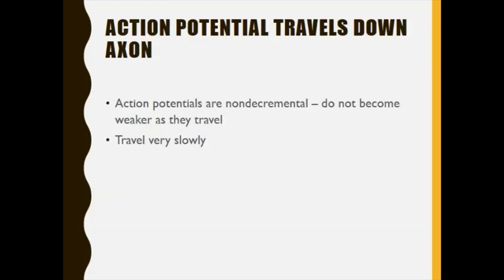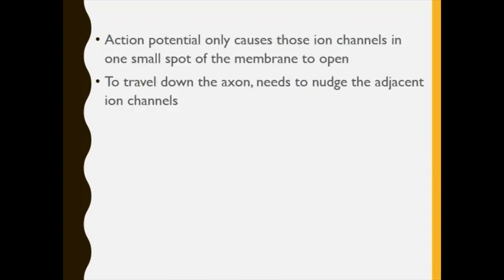As the action potential travels down the axon, it is non-decremental — it does not weaken as it travels. Unlike EPSP and IPSP, action potentials are all-or-nothing; they do not diminish with distance. The action potential causes ion channels to open in one small spot of membrane, and to travel down the axon it nudges the adjacent ion channel to open.